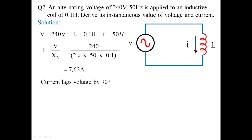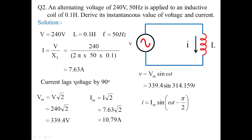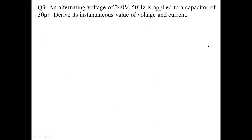For a pure inductor, the current lags voltage by 90 degrees. The maximum voltage is the same as before: Vm = 339.4 V. The maximum current Im = 7.63 × √2 = 10.79 amperes. The instantaneous voltage is v = 339.4 sin(314.159t), and the instantaneous current is i = Im sin(ωt − π/2) = 10.79 sin(314.159t − π/2).